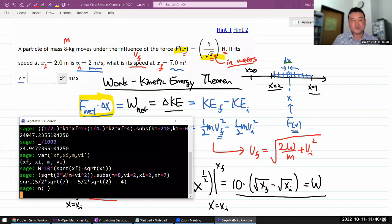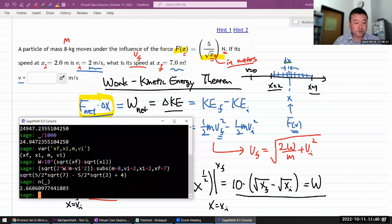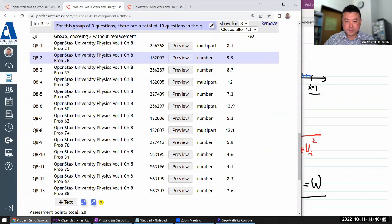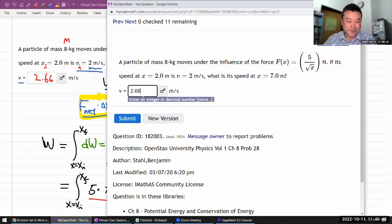I forgot to put a dot somewhere. So it'll do numerical, the decimal approximation. 2.66 meter per second. So that should be right, if I didn't make a mistake with integration.